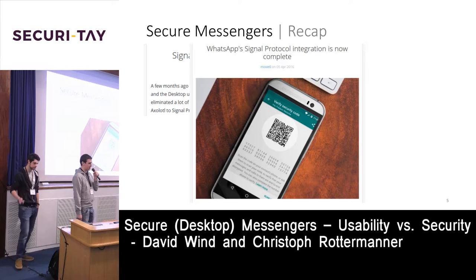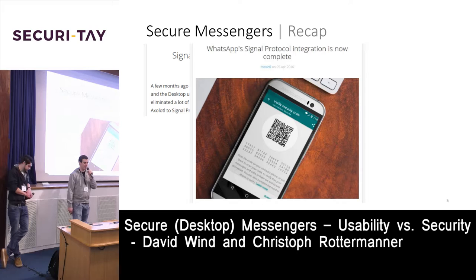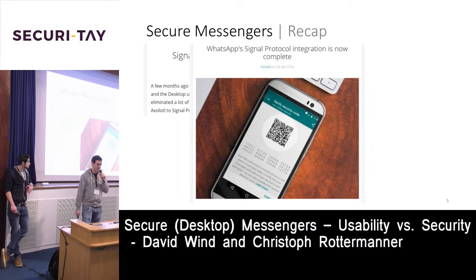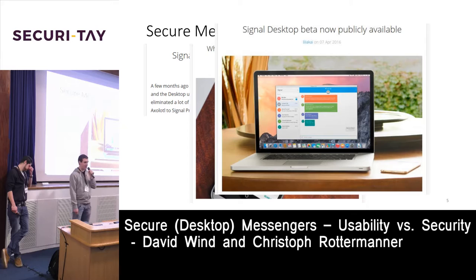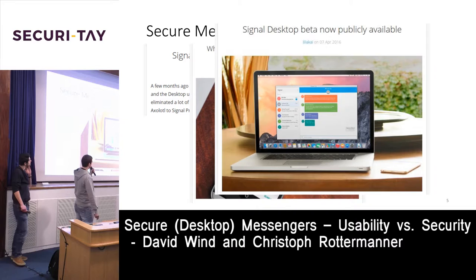Then, in a big step, WhatsApp decided to implement the end-to-end encryption protocol from Signal. You can now chat end-to-end encrypted in single chats and group chats. Signal Desktop, which was previously closed beta requiring an invite, also went public so everyone can now use it.